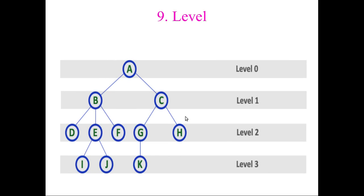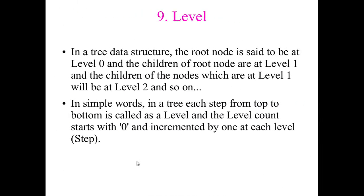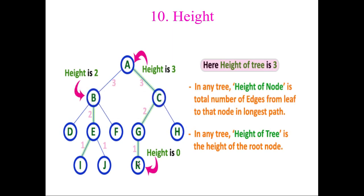Next we are going to see about level. Level tells us where we are in the tree. Level starts from zero at the root node. From the root, the next level is level one, then level two, and level three, and so on. So level starts at the root node with zero.